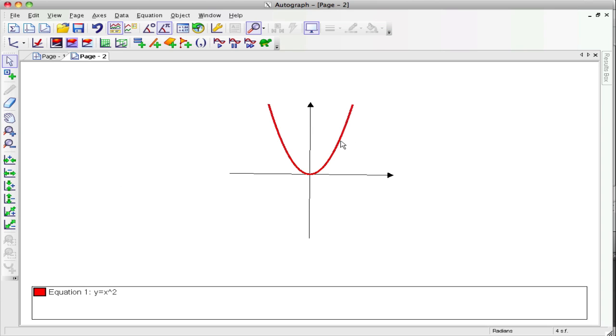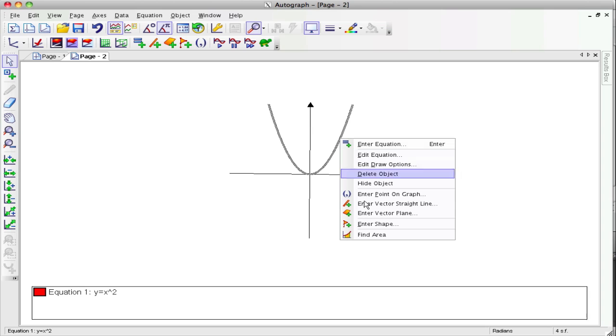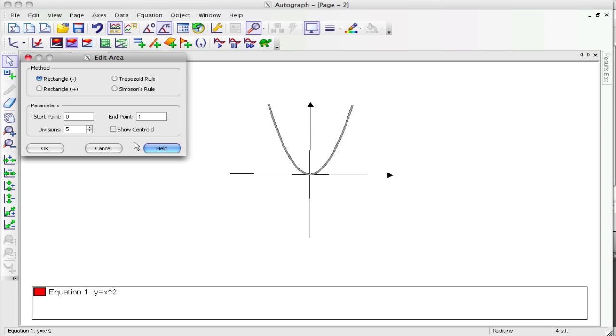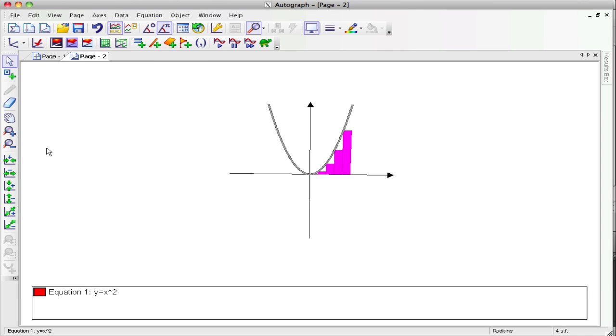All right. So now, if it's gray, that means it's selected. If it has a color, that means it's not. So I want you to make it gray. Select it. Control-click if you're on a Mac or right-click if you're on a PC, and click Find Area. Rectangles are fine. We'll start at 0 and go to, let's just say 2, and divisions 5. We'll increase that later. So there's our area.